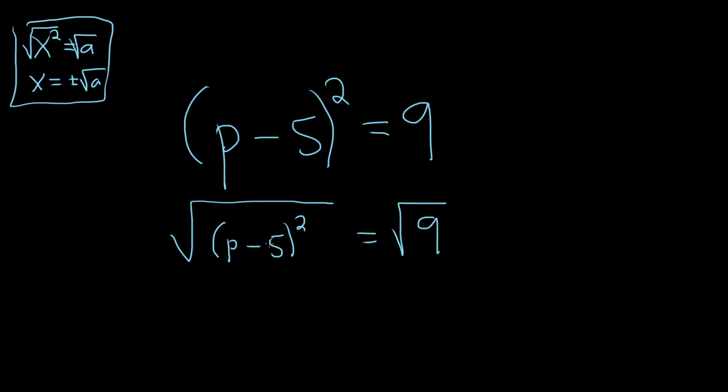And so now, when you take the square root on the left, the 2 goes away, the square root goes away. So you just get p minus 5. And that's equal to plus or minus. And the square root of 9 is 3.